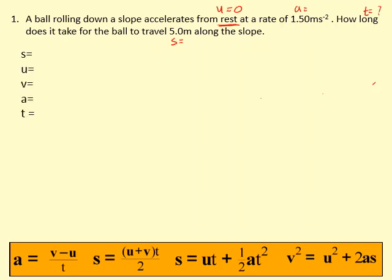So I write SUVAT just like this and I start filling the information in. So we have five and then U is zero, the initial velocity. The final velocity we don't know. Actually, we're not even interested in that. The acceleration is 1.50 and the time is what we're looking for. So what I need to do is I need to find the equation which doesn't have V in it because I'm not interested in V. The equation that doesn't have V in it is this one.